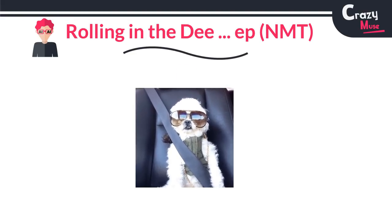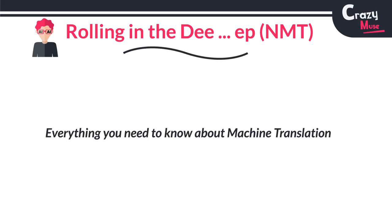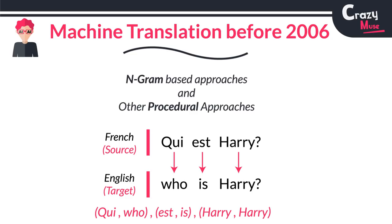Fasten your seatbelt because we're going to answer all these questions and cover various papers on machine translation. Now up until 2006, n-grams had been the favorite pick for language modeling as well as statistical machine translation.